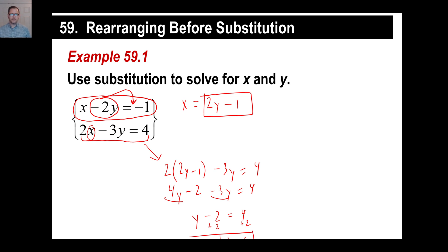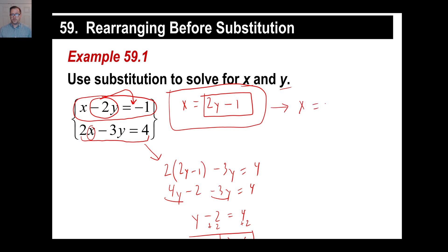We're halfway done. We need to find x as well. Use the equation x equals 2y minus 1. Since y is 6, we have x equals 2 times 6 minus 1, which is 12 minus 1, so x equals 11.